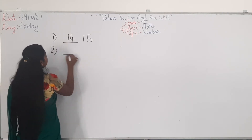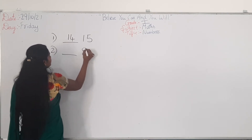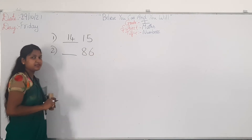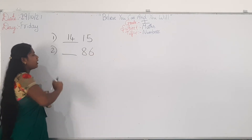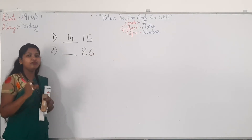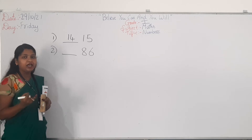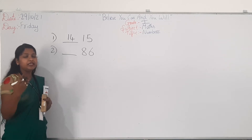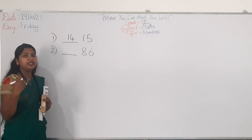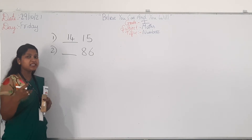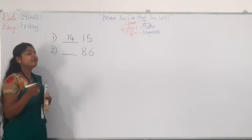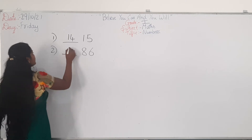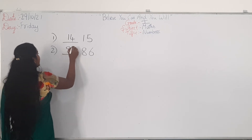Next, see 86. Which number comes before 86? Count from 80: 81, 82, 83, 84, 85, 86. So, which is the number coming before 86? It is 85.